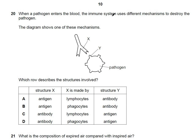Question 20: when a pathogen enters the blood, a mechanism involving antibodies (X) and antigens (Y) is shown. X is the antibody with a receptor complementary to the antigen shape. Antibodies are made by lymphocytes. Y is the antigen — a marker on the pathogen that stimulates antibody production. The answer is C.